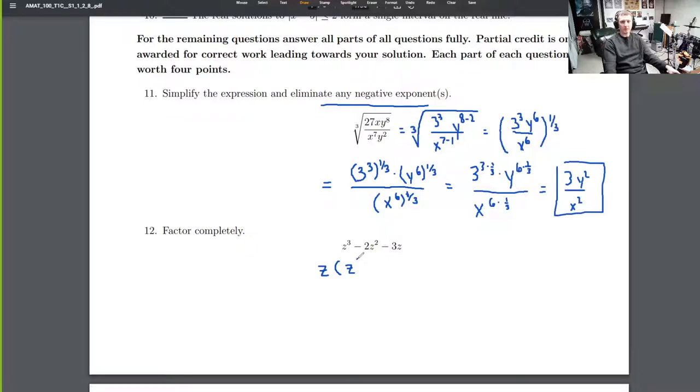z times z squared minus 2z minus 3. I see that quadratic factors as well. We've got 1 times 3, which gives us 3. But we have a negative sign there, so it's going to be either minus 1 times 3 or 1 times negative 3. That's the one we're going to use: 1 times negative 3, because negative 3 plus 1 is negative 2.